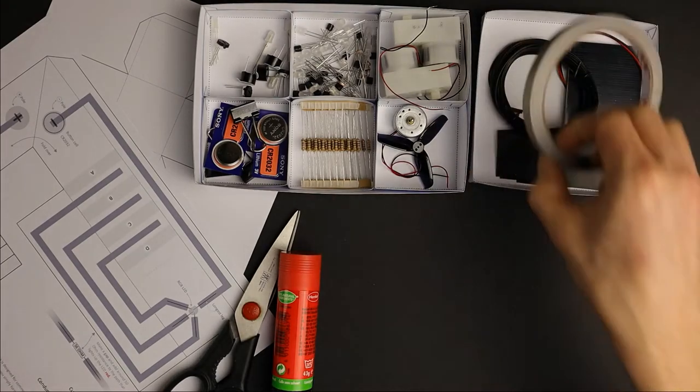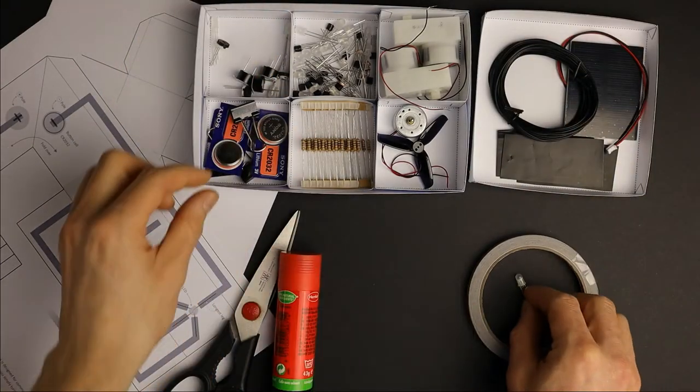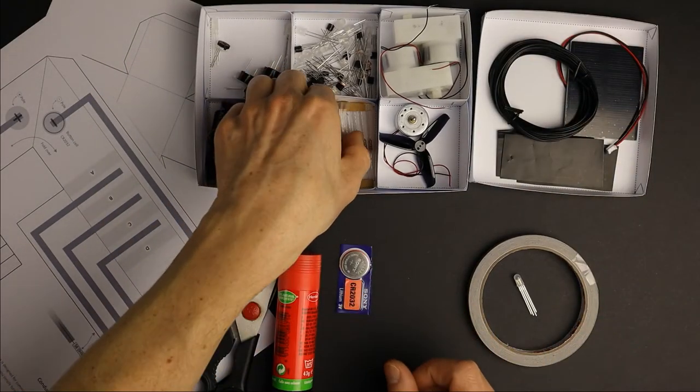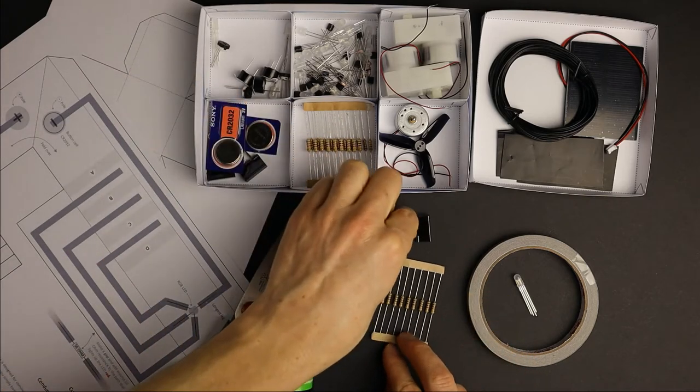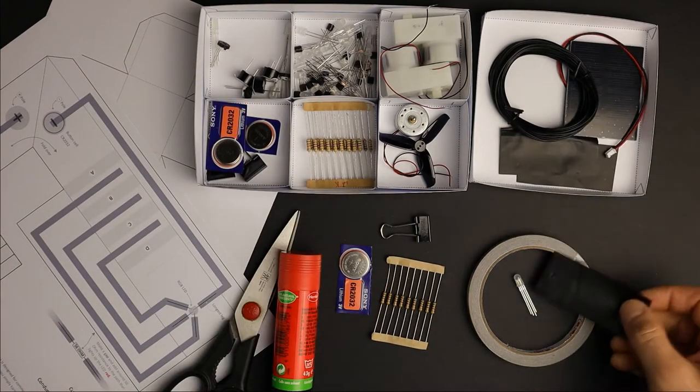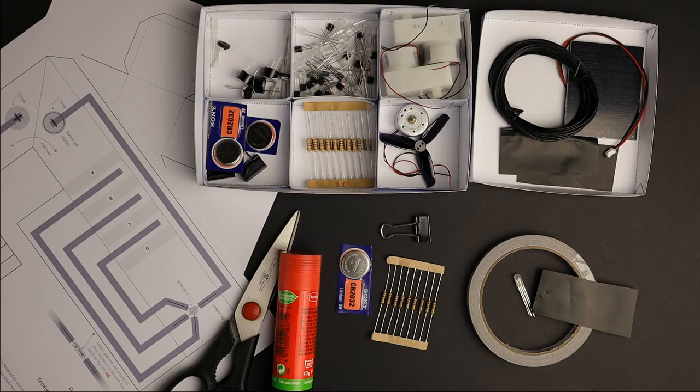an RGB LED, a button cell, a small resistor, and a binder clip. The Velostat is optional, more on that later. You find a shopping list with all the links in the video description.